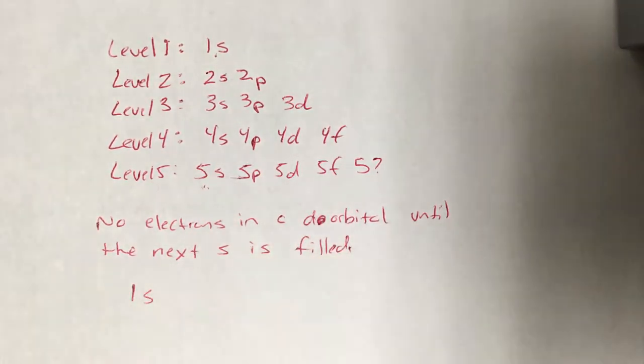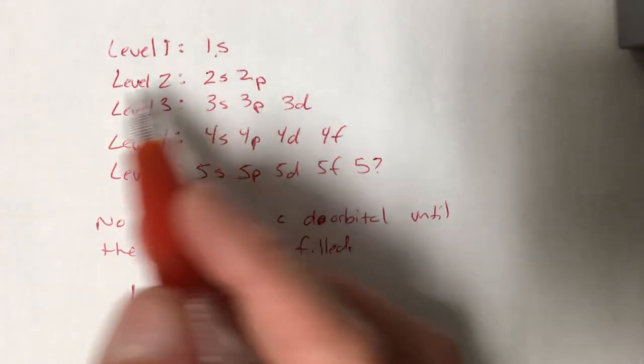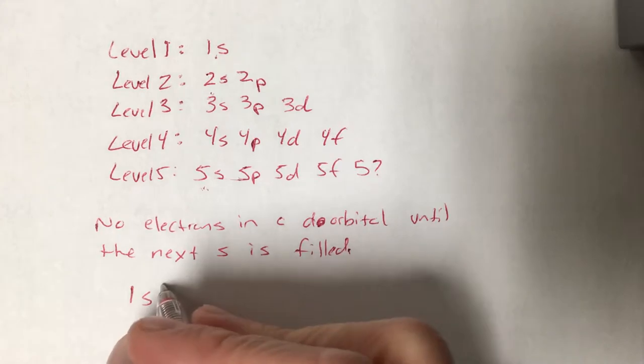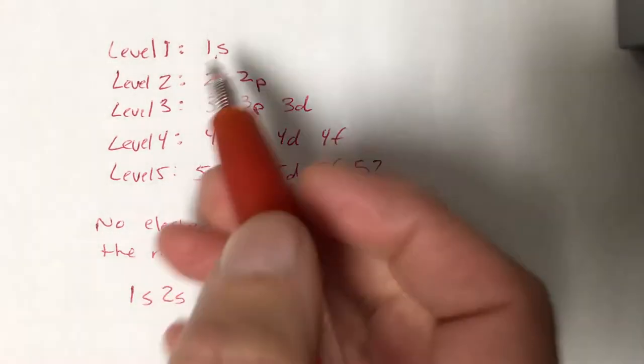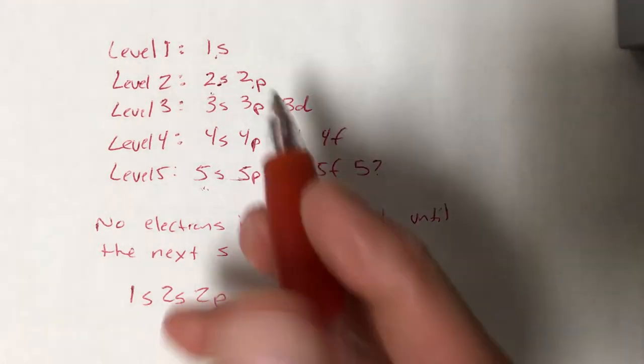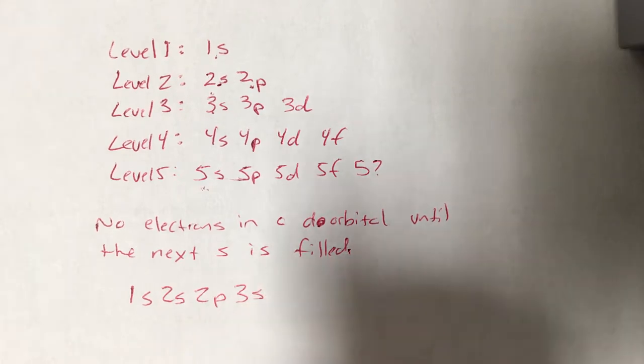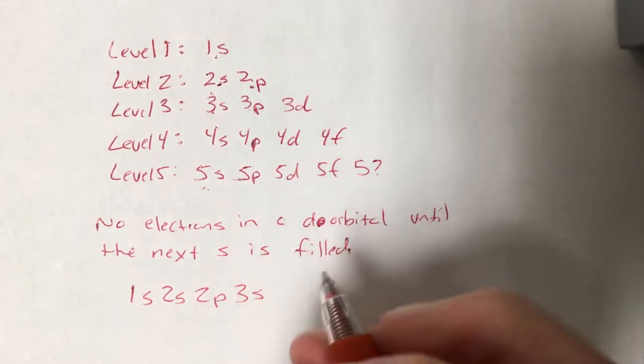The first orbital is 1s, and then we're full on that level, we move up to the next. Our next orbital is 2s. When that one's full, we move on to the next: 2p. When that one's full, we move on to the next: 3s. When that one's full, we move on to the next: 3p.